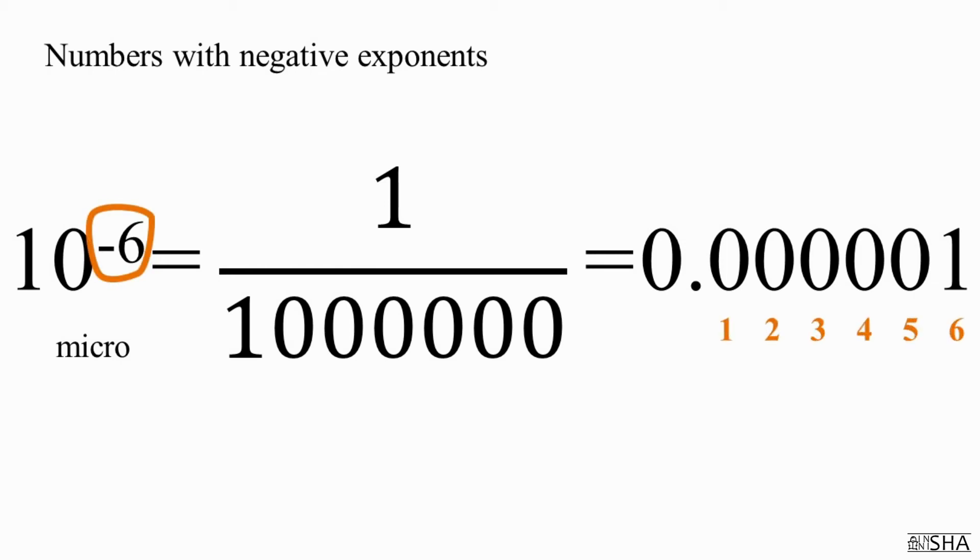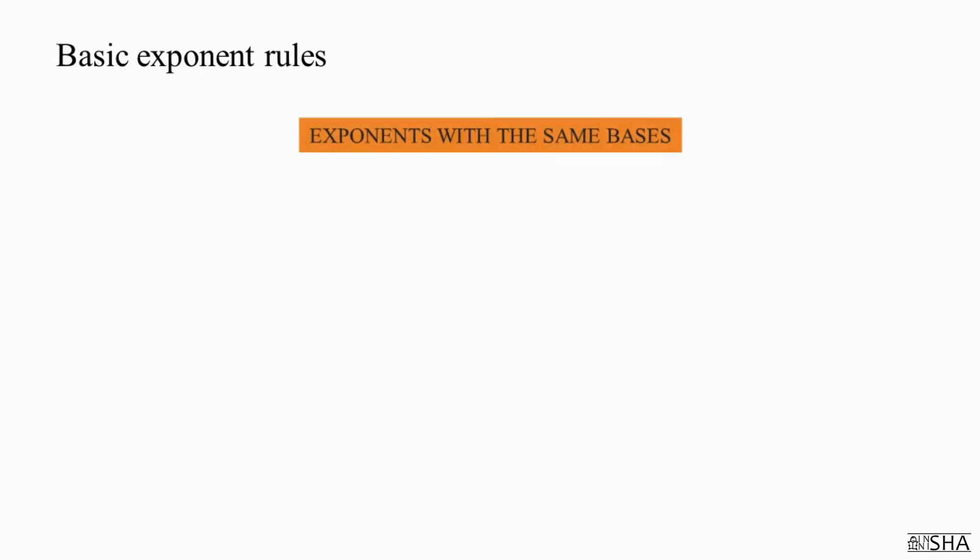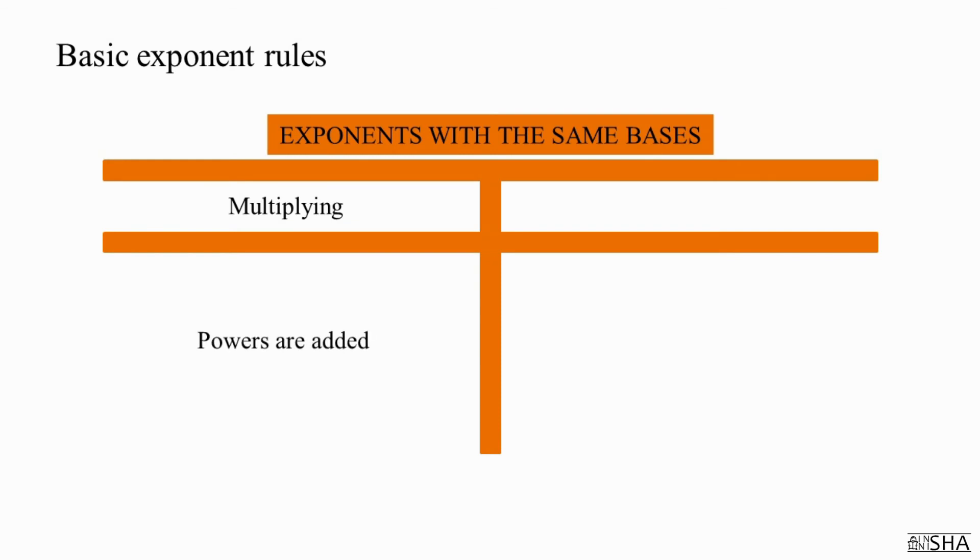Well, everything should be clear. Now let's quickly recall the basic exponent rules. When multiplying exponents with the same bases, the powers are added, and when dividing exponents with the same bases, the powers are subtracted.